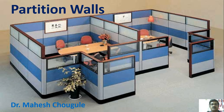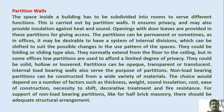There are various types of partition walls which are used in construction. The space inside a building has to be subdivided into rooms to serve different functions — this is carried out by partition walls. It ensures privacy and may also provide insulation against heat and sound. Openings with door leaves are provided in these partitions for access. The partitions can be permanent, or sometimes, as in offices, it may be desirable to have a system of internal divisions which can be shifted to suit the possible changes in the use pattern of the spaces.